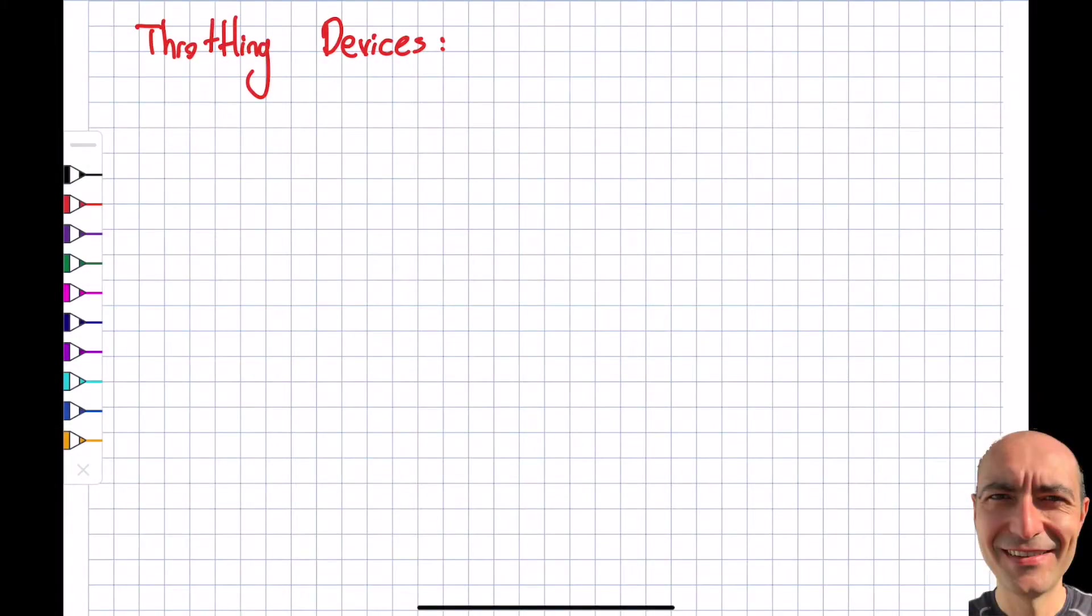All right, why don't we go ahead and talk about throttling devices right now? In general, these are flow restriction devices. In the fluid mechanics class that you may take from me or somebody else, we will study these in more detail. But at this point what I need to do is explain how it goes from the conservation of mass and energy point of view for these devices.